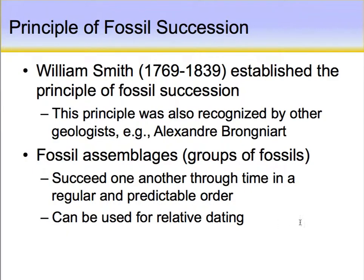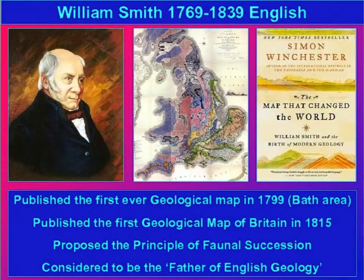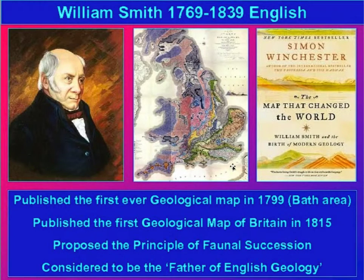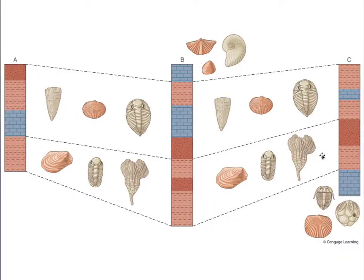Fossil assemblages succeed one another in time in a regular, predictable order and are useful for relative dating techniques, as William Smith demonstrated. Smith was also famous for producing the first geologic map of an entire country — he mapped all of Great Britain — and is considered the father of English geology. His principle of fossil succession was a major contribution, allowing fossils found in certain rock groups to be correlated to time-equivalent strata in other locations.